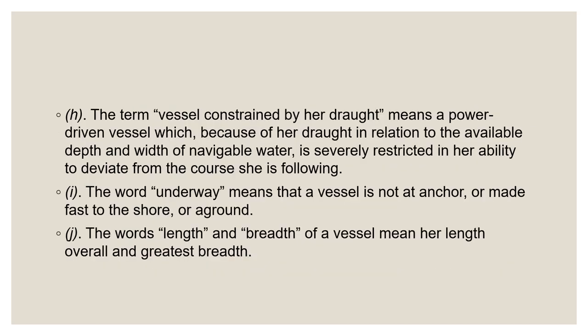Part H covers vessels constrained by draft. This term covers cases such as a large vessel passing between islands or a vessel in a channel whose draft exceeds the water depth outside the channel. The depth directly underneath the vessel is not the determining factor; rather, the depth — or lack of it — close to either side of the vessel determines the level of constraint. Rule 18 Part D prescribes the action to be taken by vessels constrained by draft, and Rule 28 gives the lights and shapes for such vessels.